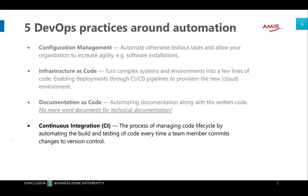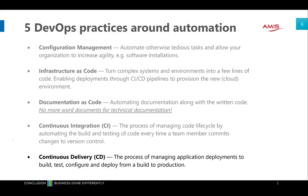When you have infrastructure as code and documentation as code, you want to automate it. First, we have continuous integration — the process of managing our code lifecycle by automating the build and testing of code every time a team member commits changes. That's the start: you have infrastructure as code scripts, check them in, and they get built. Then we have continuous delivery — managing the application components: the build code is ready, tested, configured, and deployed from development all the way to production.